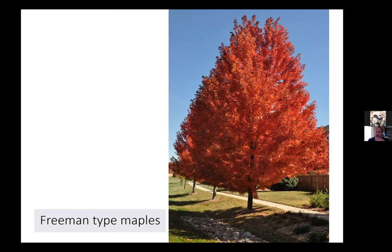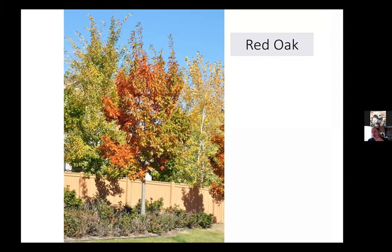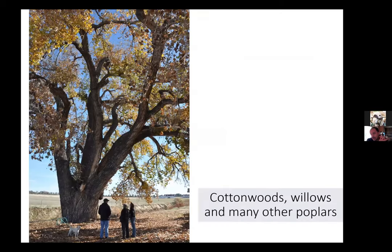The same thing applies to red oak — the same micronutrient issue with our high-pH soils, and we're having increasing problems with Kermit scale and drippy blight. I just wouldn't plant red oaks either. Finally, I would not plant in a landscape setting cottonwoods, willows, or other poplars — and that includes aspen in most situations. In a landscape setting they get too big, they're too messy, some sucker like aspen, and they need too much water.